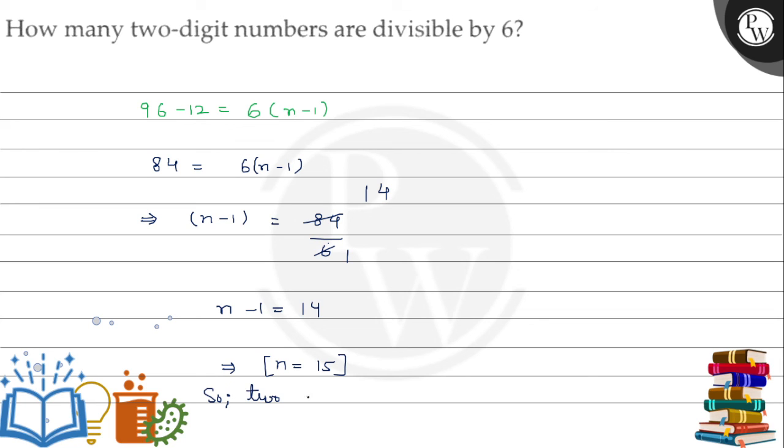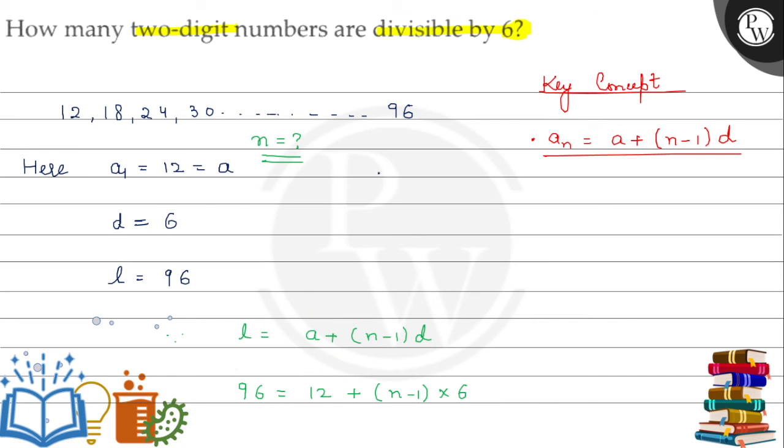Therefore, two-digit numbers divisible by 6 are 15. Total 15 numbers. So this is the required answer. Hope you understand it well. Best of luck, thank you.